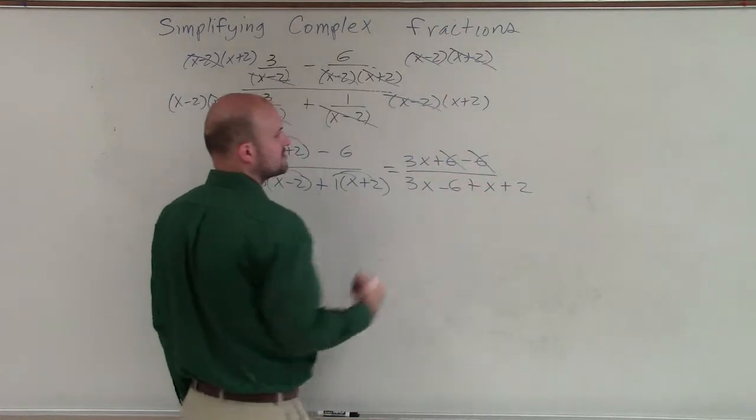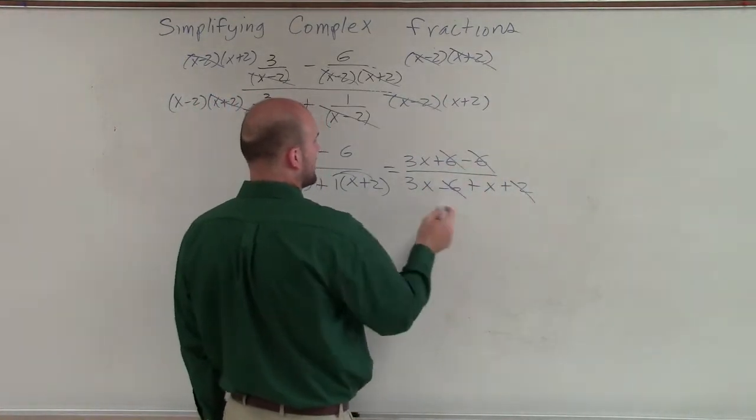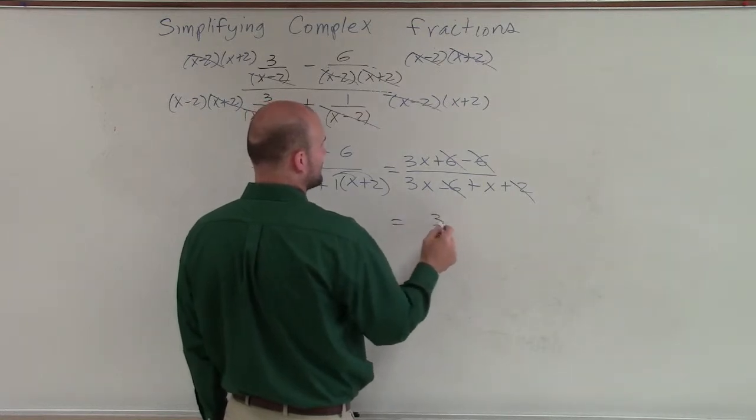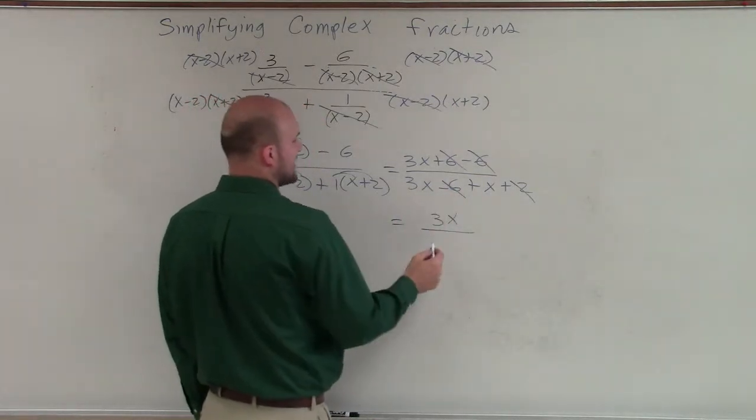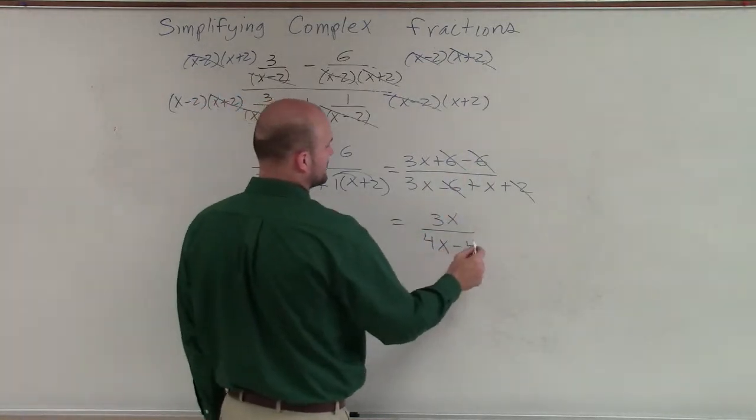Well, we know that those subtract to 0. And then those are going to go to a negative 4. And that becomes 4x. So therefore, I'm left with 3x in my numerator. 3x plus x is going to be 4x. And negative 2 plus 2 is a minus 4.